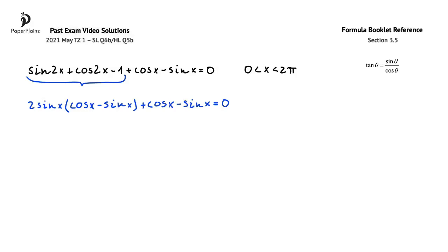In our next step, we'll factorize. We have cos x - sin x in both terms. Therefore, we can factorize cos x - sin x, and from the first term we have 2sin x left, while from the second term we simply get +1. This equals 0.